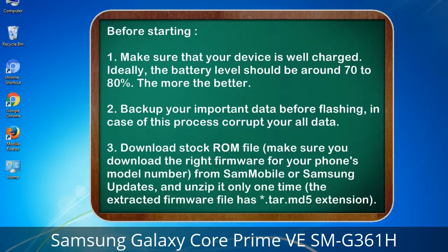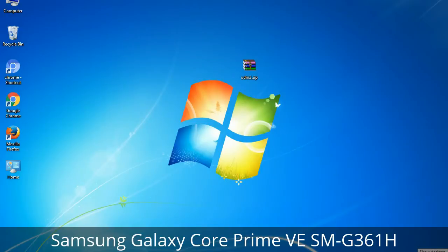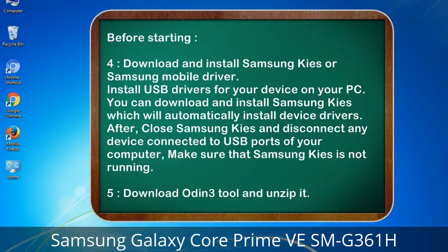3. Download the stock ROM file. Make sure you download the right firmware for your phone's model number from Sammobile or Samsung Updates, and unzip it only one time. The extracted firmware file has a *.tar.md5 extension. 4. Download and install Samsung KIES or Samsung mobile driver to install USB drivers for your device on your PC. You can download Samsung KIES which will automatically install the device drivers.